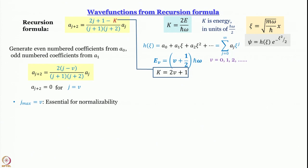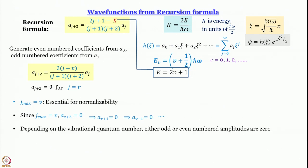Having found j_max = v, we consider further: since a_{v+3} = 0, it follows that a_{v+1} = 0, and going down by steps of 2, a_{v−1} = 0 as well. This means that if v is even then v+1, v−1, etc. are odd, so all odd-numbered coefficients vanish. Conversely for odd v, all even-numbered coefficients vanish.